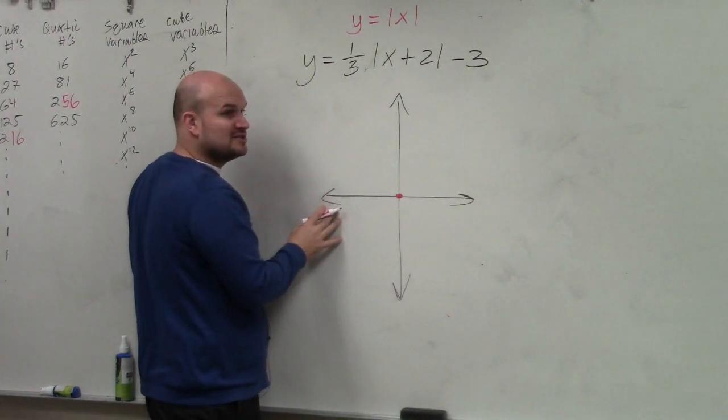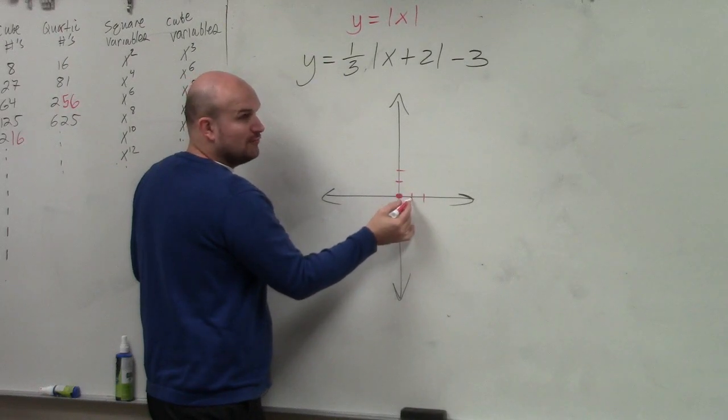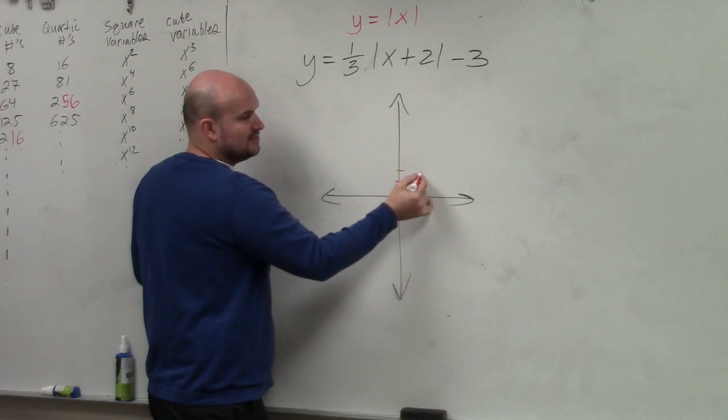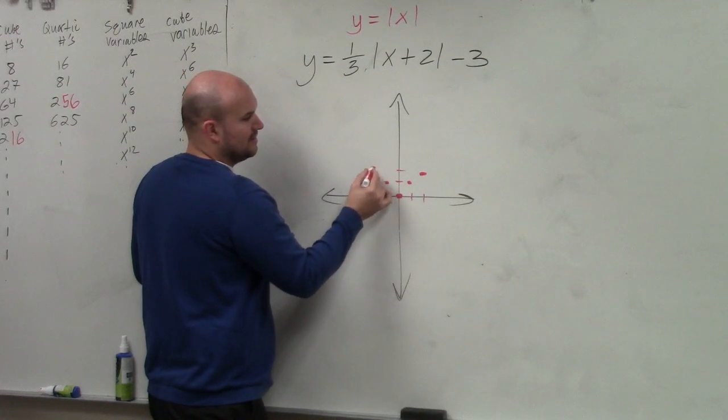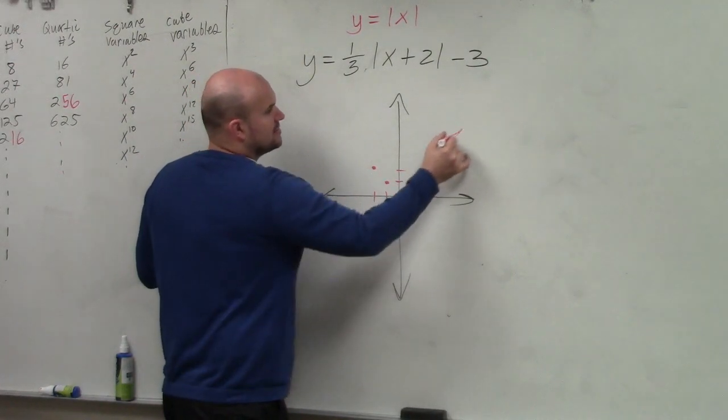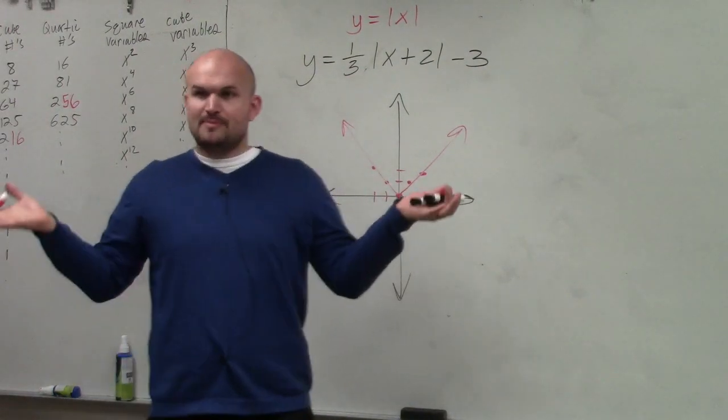I'm not going to do the table, but when I first taught this, we used a table to understand the points. Absolute value of 1 is 1, absolute value of 2 is 2. That's the same for negative 1 and negative 2. So it looks like a V. That's what the parent graph looks like.